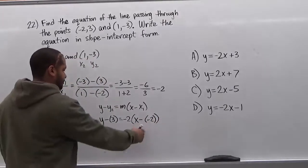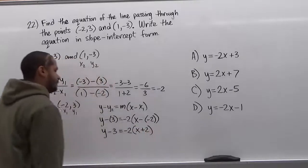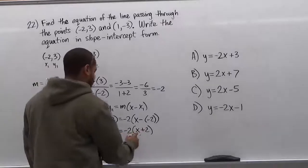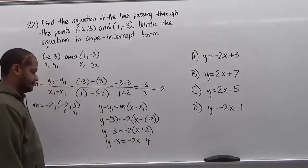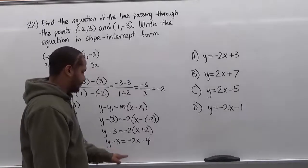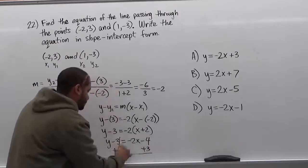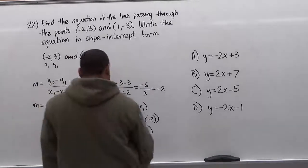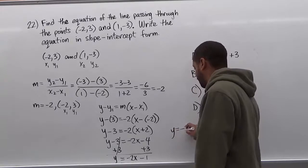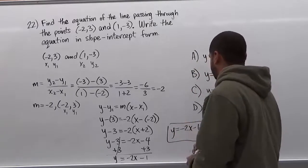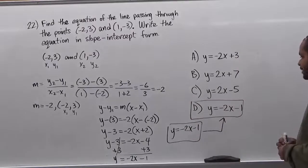Simplifying the parentheses first by order of operations: y minus 3 equals negative 2 times the quantity x plus 2. Now we distribute the negative 2 to both terms: y minus 3 equals negative 2x minus 4. Adding 3 to both sides to isolate y, those terms cancel, and negative 4 plus 3 gives negative 1. So we have y equals negative 2x minus 1. Matching this to the answer choices, it's answer d: y equals negative 2x minus 1.